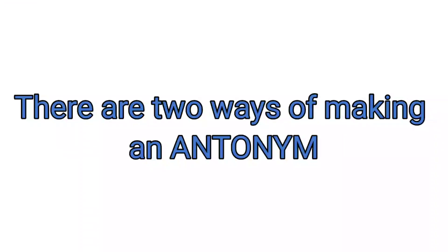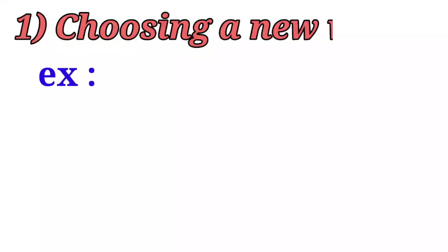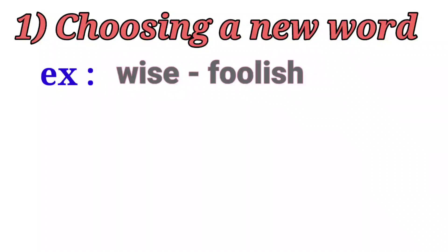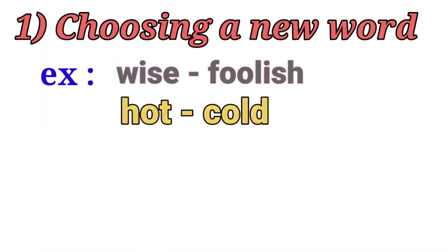There are two ways of making antonyms. One is by choosing a new word. For example, wise — the opposite word is foolish. Here, the word foolish is a new word. Hot — the opposite is cold. Cold is here a new word. This is one way.